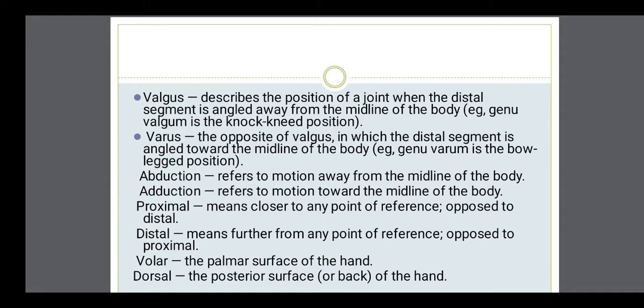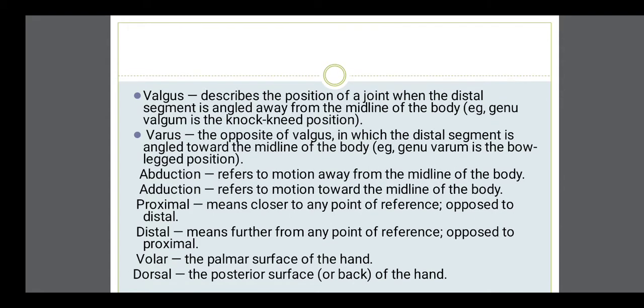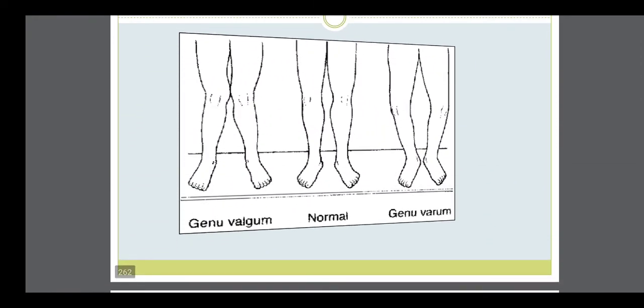I will describe two terms related to abnormality: valgus and varus. Valgus is a term which describes when a segment of the joint is moved away from the midline of the body. Varus means when the distal segment, a part of the joint, is angled towards the midline of the body — that is genu varum. I will show the diagram related to genu valgum and genu varum. Valgum is when the knee joint is shifted away from the midline — the board knee.